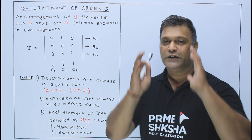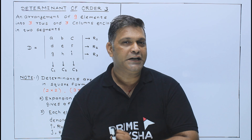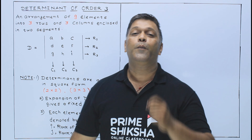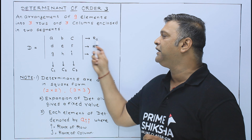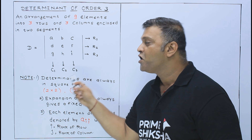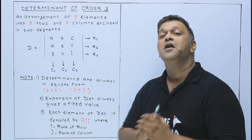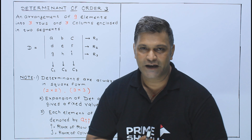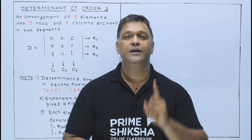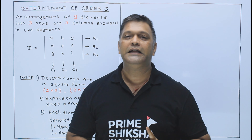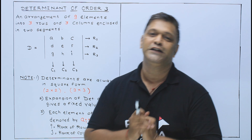So I hope you understand that for order 3, we arrange 9 elements into 3 horizontal rows and 3 vertical columns. I hope you understand the order 3 concept and the arrangement concept — that is the Determinant of order 3.